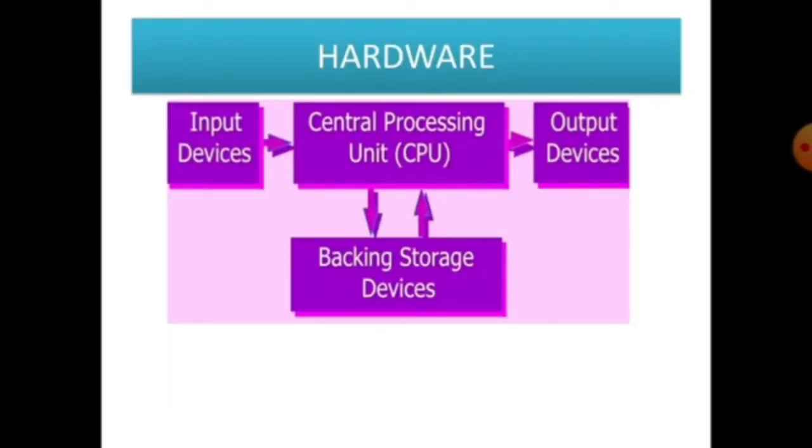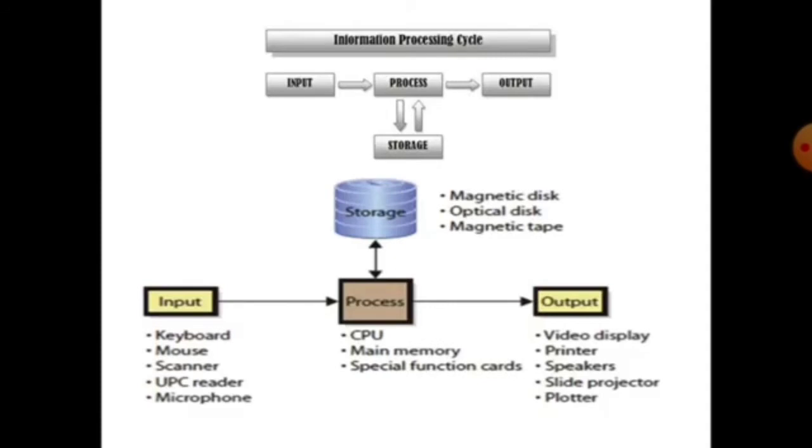Now hardware. Hardware can be divided into four components: that is input device, central processing unit, output device, and storage device or backing storage device. So next topic will be IPO cycle. But first let me tell you what is IPO. I means input device or input, P means process, and O means output.